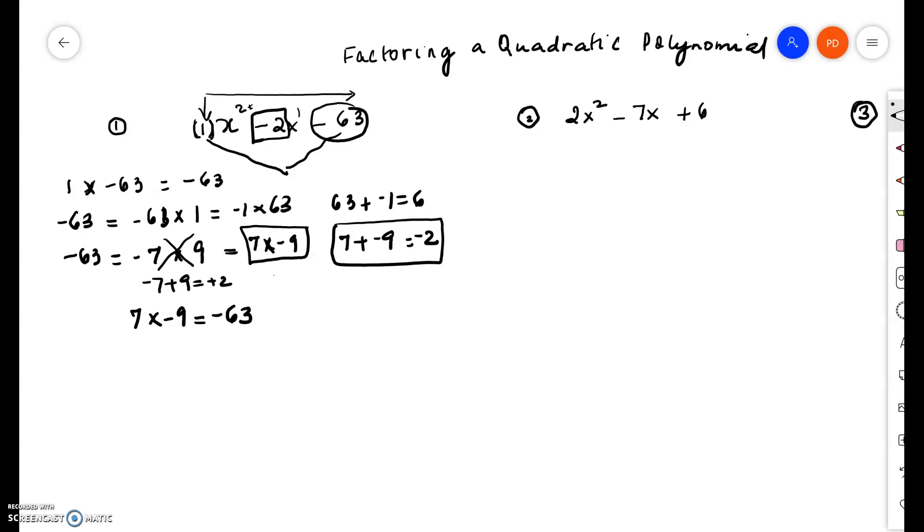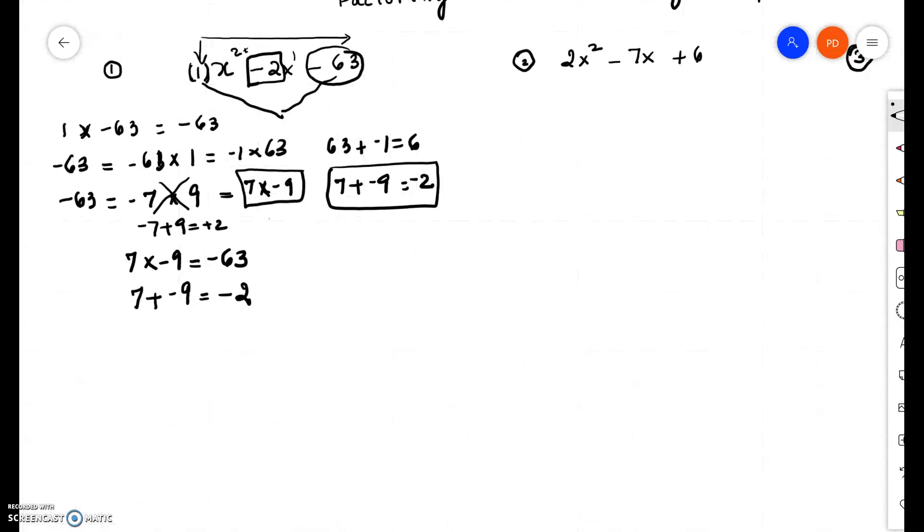And also, remember, we are choosing those specific factors that will add up to negative 2 because that's the coefficient of the middle term. So now, we follow a certain procedure. So let's write this down.